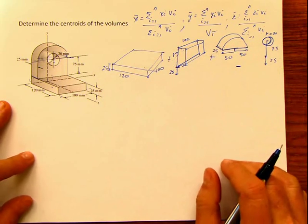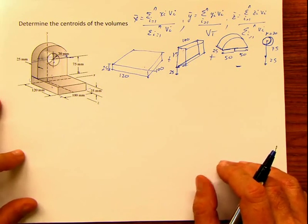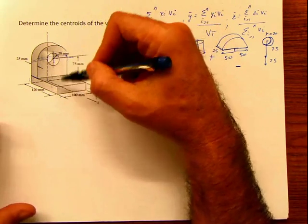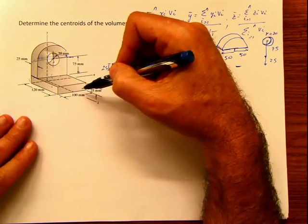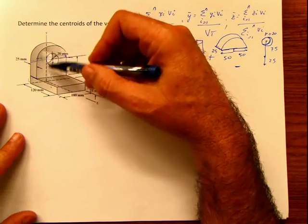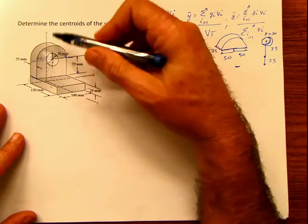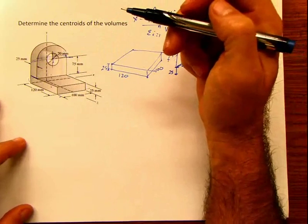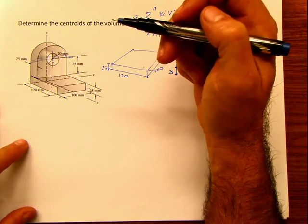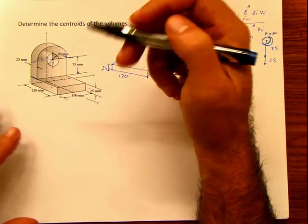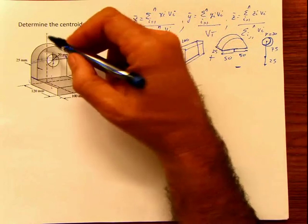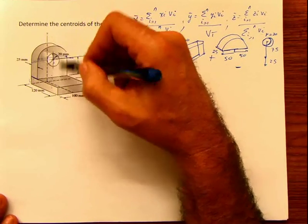Now look at what is happening here. I always tell you to set up your axis so that the whole figure is in the first quadrant with no negative distances. However, in this particular case the axis is set up at the center of the shape. The problem sets it up there because this shape is symmetric.